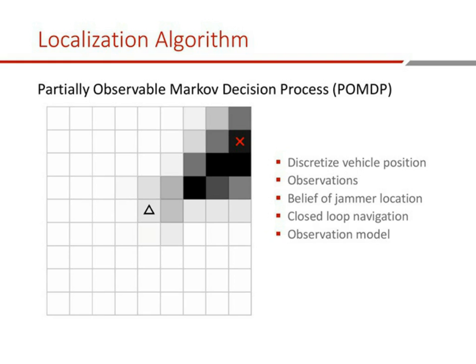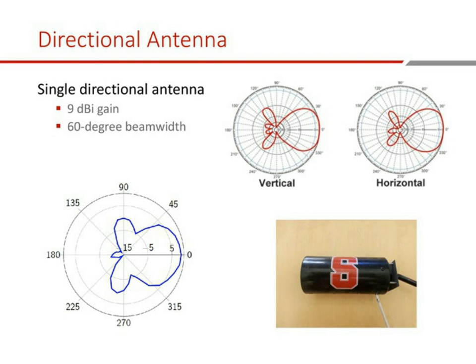Onboard JAEGER, we have a single directional antenna with pretty decent gain and a 60-degree beam width — the width of that main lobe. You can see the manufacturer's spec in the top right and a test pattern we created at the bottom. It looks very close to what the manufacturer sent us, and you can see that directionality.